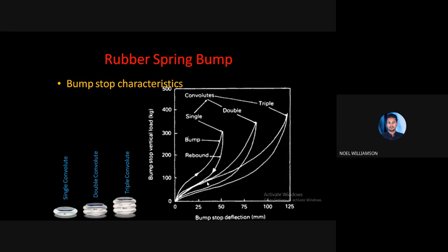The typical characteristic curve is shown here. From the curve we can see that for a single convoluted spring it is more linear but has low stiffness — that is, a low spring rate. For single convoluted it has the highest spring rate, and comparatively lower rates for double and triple convoluted. The spring rate is the vertical load needed for unit deflection.